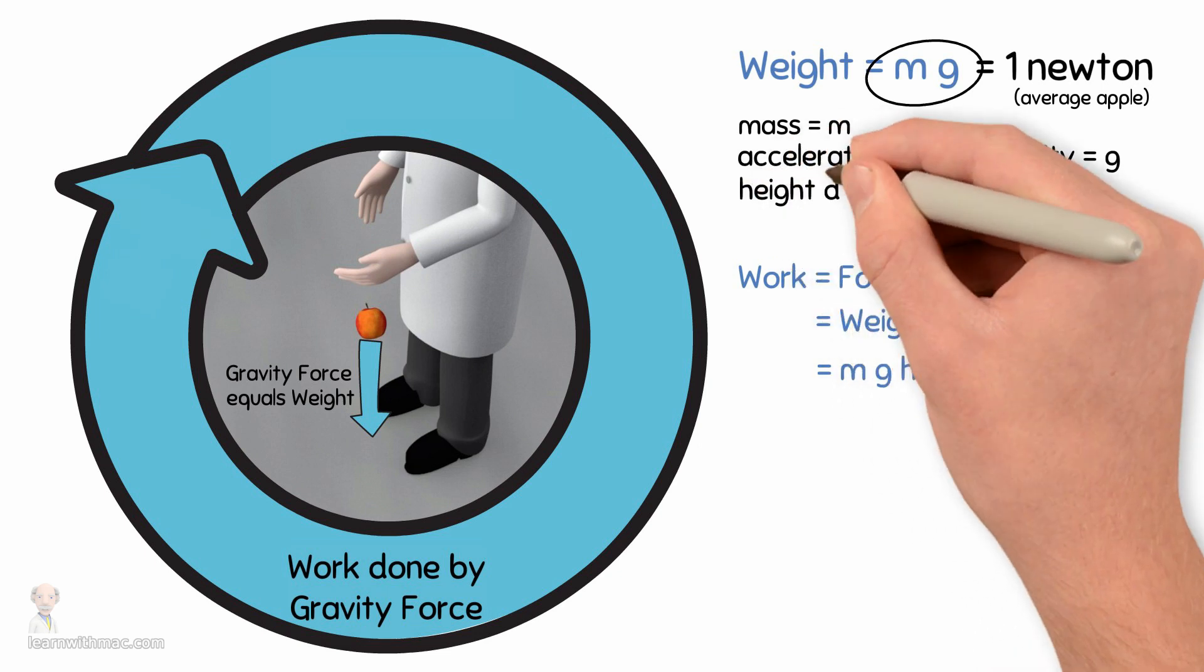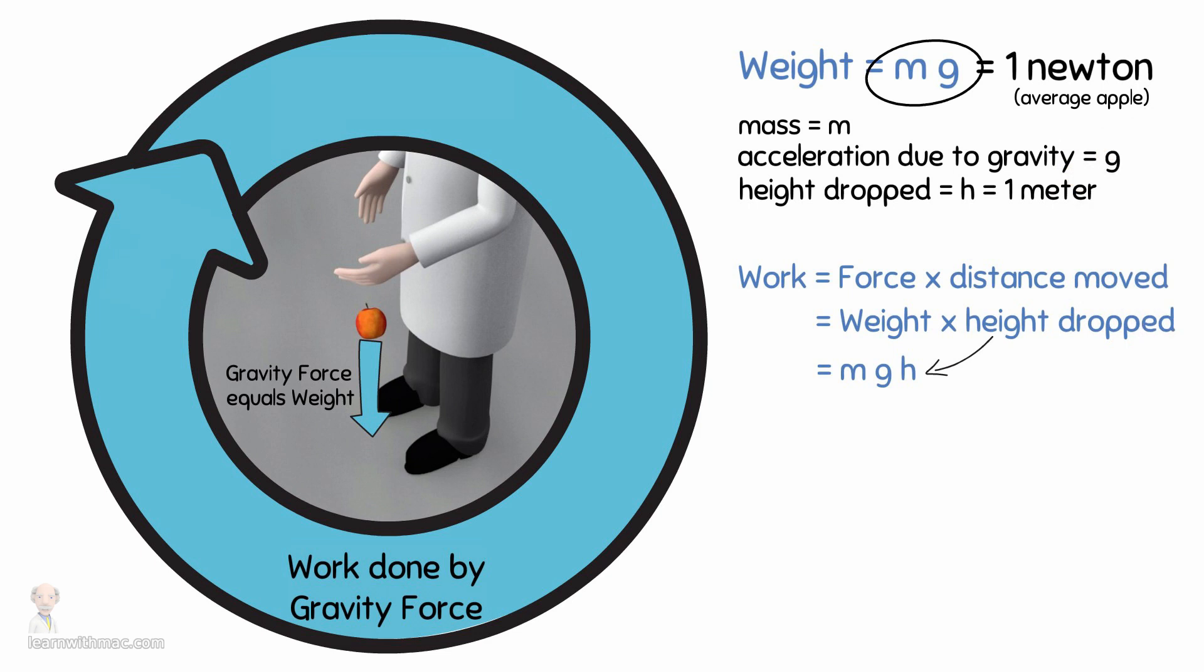Assuming the apple is dropped from a height of one meter, the work done by the gravity force on the apple is one newton times one meter, and that gives us one joule of energy transferred to the apple. Joule is the unit we use to measure energy.